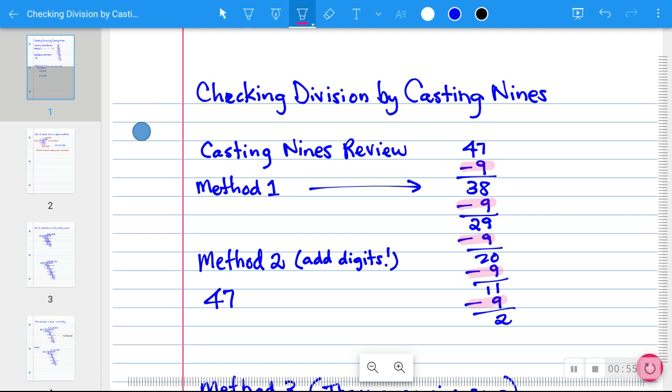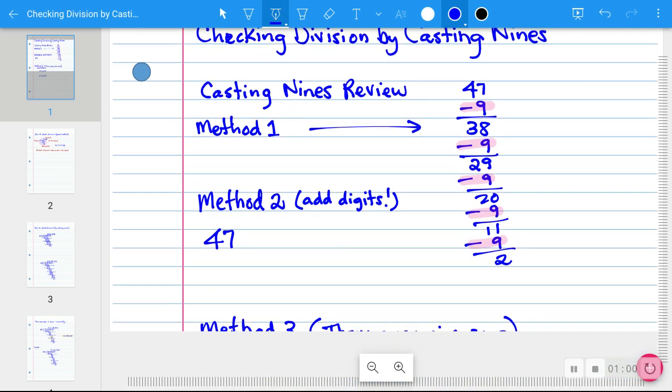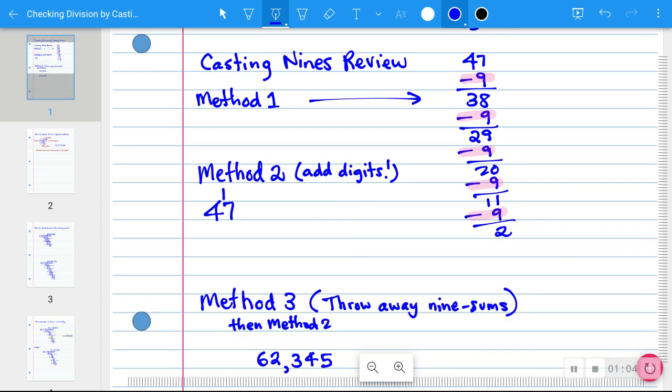And there's a quicker way to do that. Method 2, all you do is add the digits. So we're going to get this 2 here in a minute. 4 plus 7 gives 11. And that's still bigger than 9, so add the digits again and you get the 2. So that was much faster. And on bigger numbers, that's the way to go. Add the digits. And if you get a number that's bigger than 9, add the digits until you don't get a number that's bigger than 9.